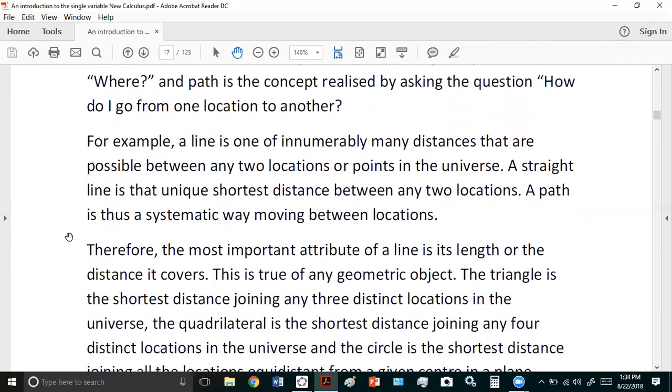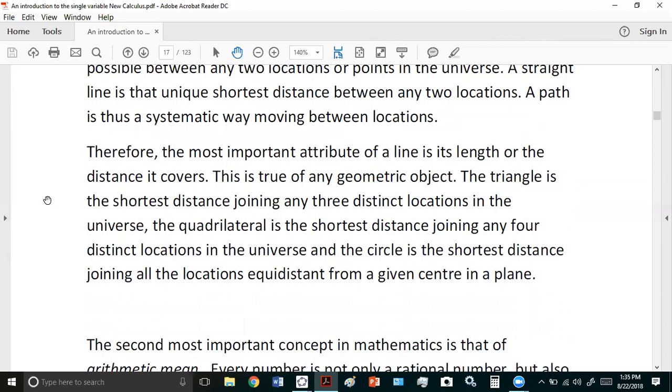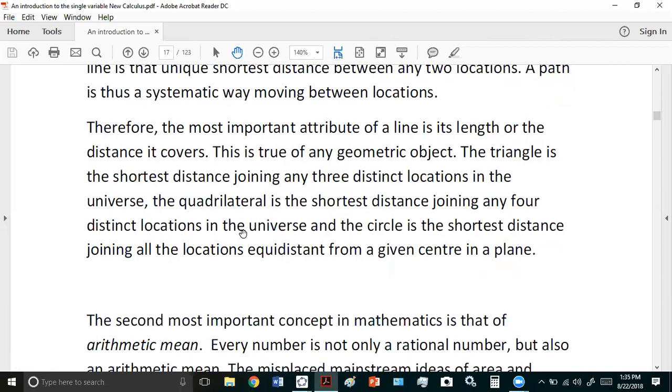This is what Euclid had tried to explain, but didn't really do such a great job. Even in my opinion, he didn't do such a great job. But for example, a triangle is the shortest distance joining any three distinct locations in the universe and the quadrilateral, any four distinct locations. And the circle is the shortest distance joining all the locations that are equidistant from a given center. So that's what a circle represents. This here could be a circle if it wasn't defined in this particular way. And we'll see more of that later.